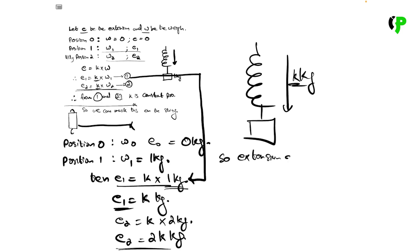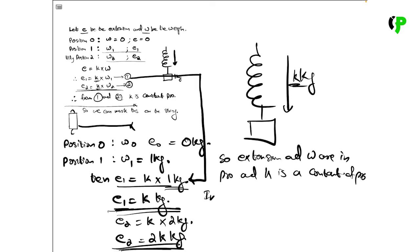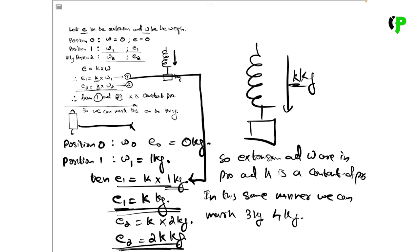Extension and weight are in proportion, and k is a constant of proportionality. In this same manner, we can mark 3 kg, 4 kg, etc. on the spring balance.